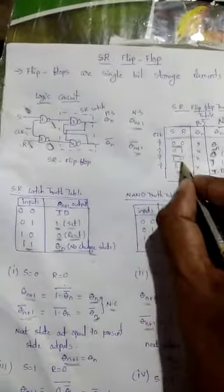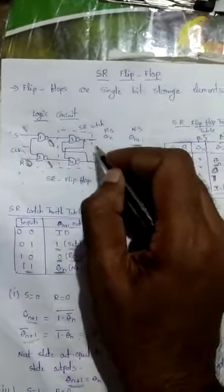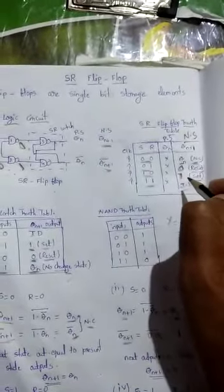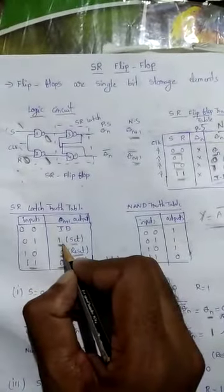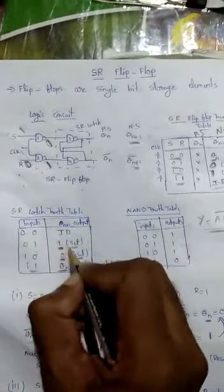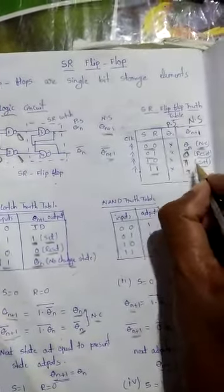Third case: S=1, R=0. NAND gate inputs 1,1 give output 0; NAND gate inputs 1,0 give output 1. Using the SR latch truth table with inputs 0,1, the next state output is 1 — called the set condition. So for S=1, R=0, SR flip-flop next state output Qn+1 = 1.